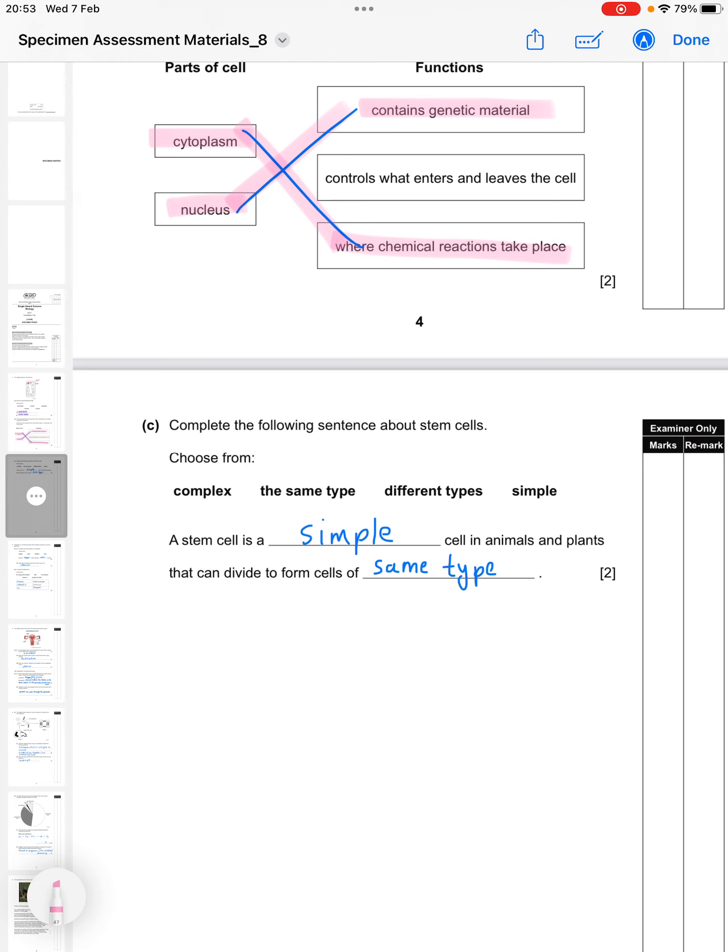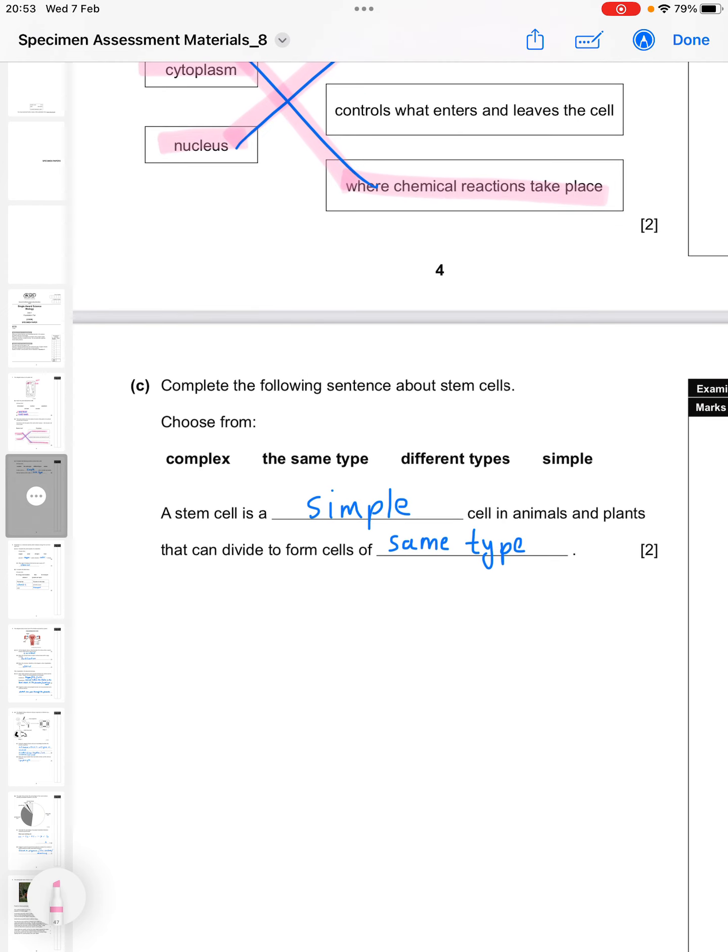Part C, complete the following sentence about stem cells. Choose from complex, the same type, different types, or simple. So a stem cell is a simple cell in animals and plants that can divide to form cells of the same type. Two marks, one for each gap.